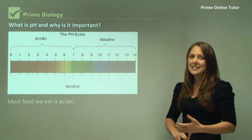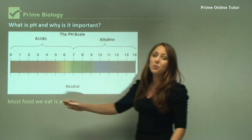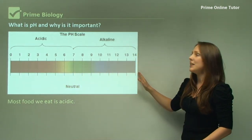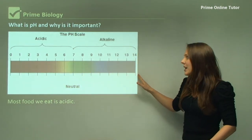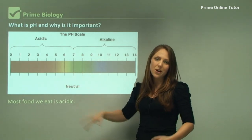Most of the food that we actually eat is acidic. This here is a pH scale. It ranges from zero, which is very very acidic, to 14, which is more alkaline.